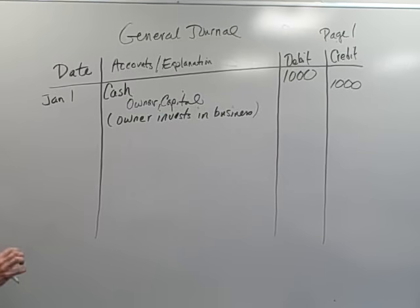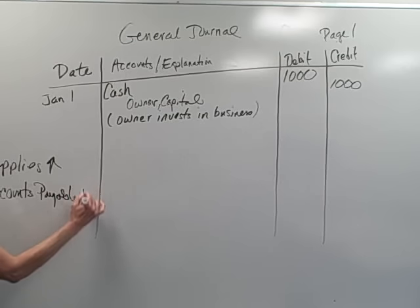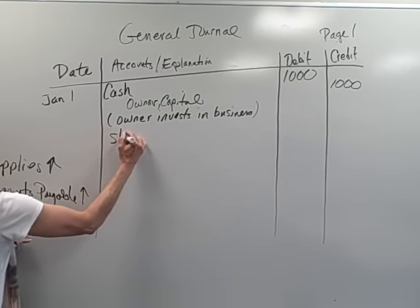Let's say that the business pays or purchases supplies on account. Now, well I know that supplies is going up. And I know that my account's payable is also going up. So I've skipped a line.